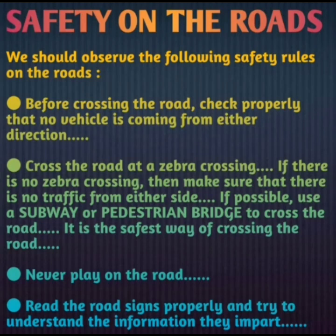The first road safety rule is: before crossing the road, check properly that no vehicle is coming from either direction. Check to your right and to your left — first check to the left, then to the right, and again to the left, and then cross the road. The second rule is: cross the road at a zebra crossing. If there is no zebra crossing, make sure there is no traffic from either side.